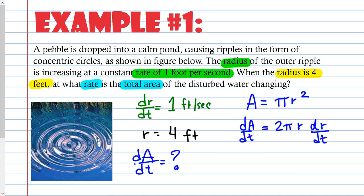I want to point something out: the formula for area of a circle is πr², and when I derived it, this right here — 2πr — is the circumference. So if you have the area and you derive it, you get circumference. Think about how area is two-dimensional. When you derive something, you lose a degree, going down to one-dimensional — and that's perimeter, and circumference is the perimeter of a circle.